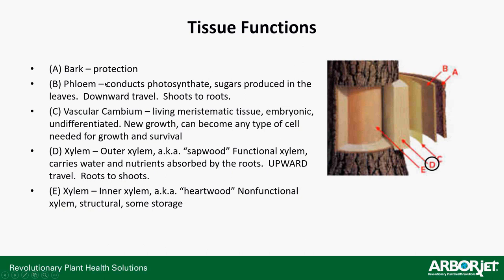The critical layer for transportation and translocation is your outer xylem, also known as sapwood. That's your functional sapwood — it conducts water, minerals, and when you inject, it conducts your product up to the leaf tissue throughout the tree. Finally, the center is your inner xylem or heartwood — non-functional xylem, there for storage and mainly structural rigidity. It's the pillar you build around.